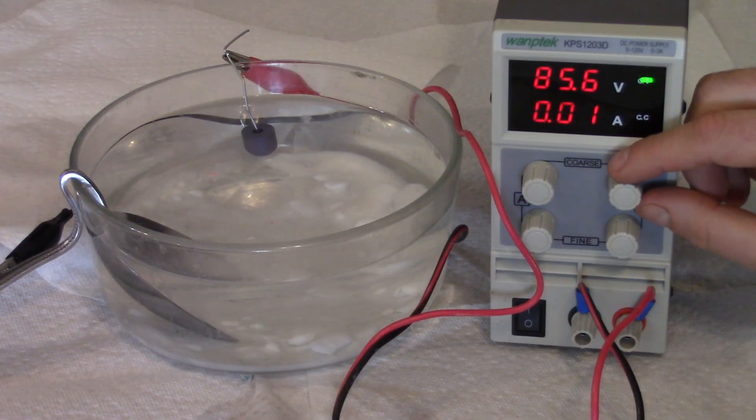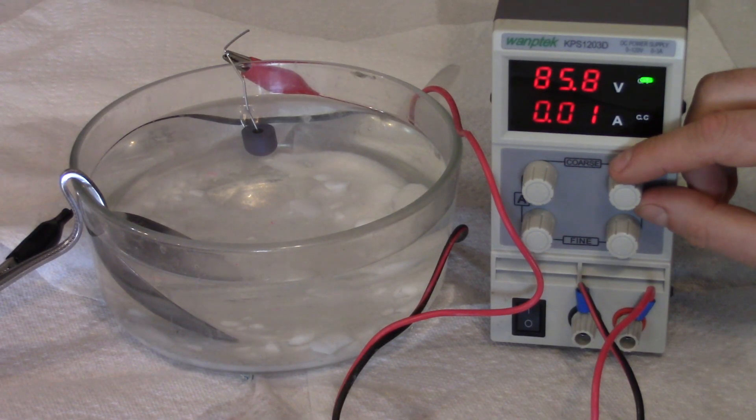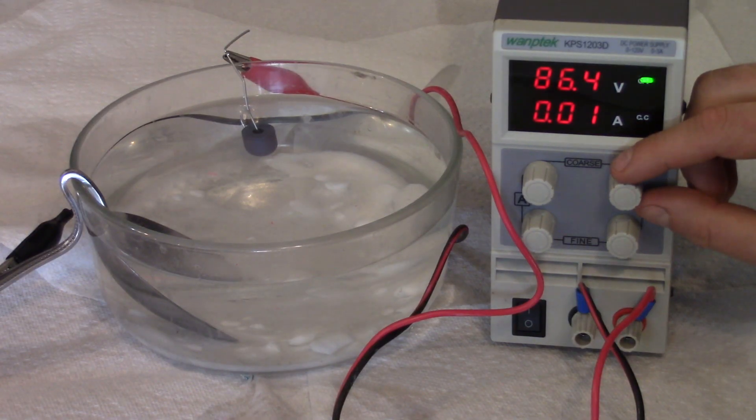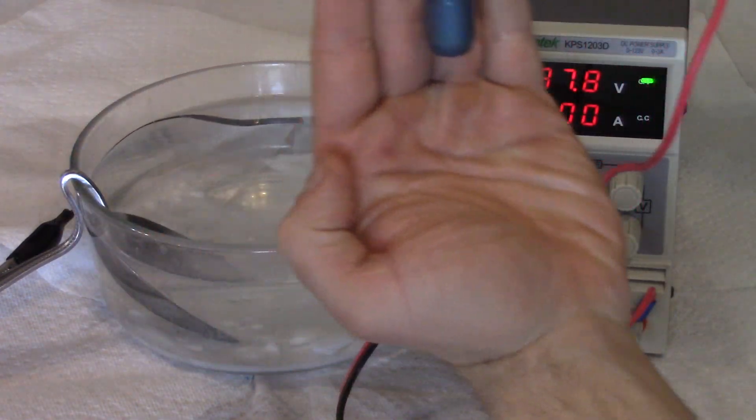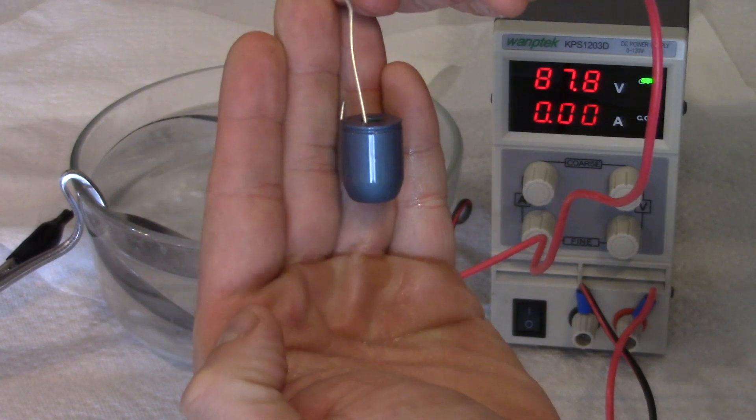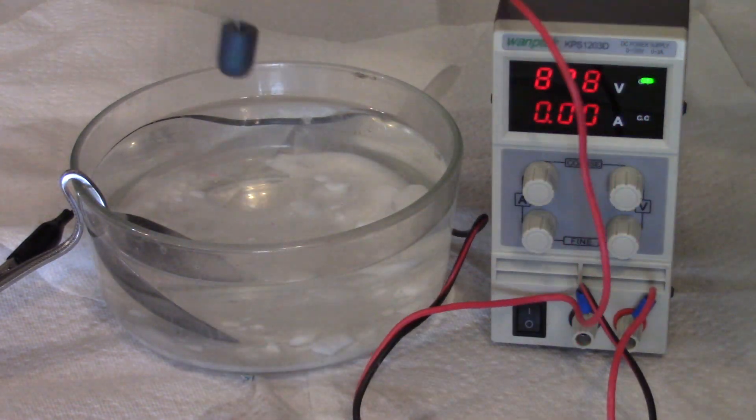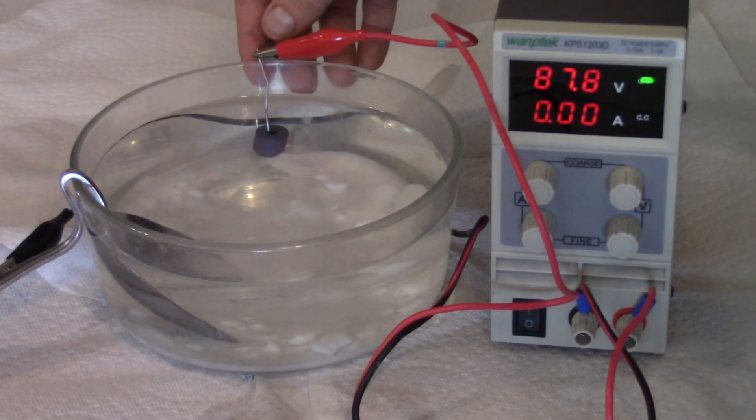At like 88 volts gives you an awesome turquoise. If you want like a turquoise color, I'd say like 88 volts perfect.